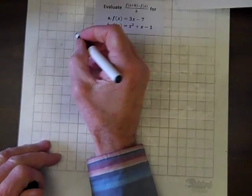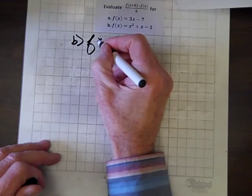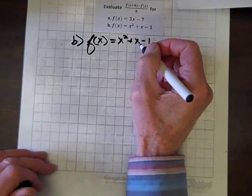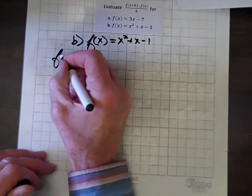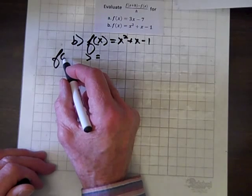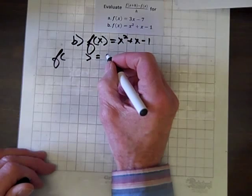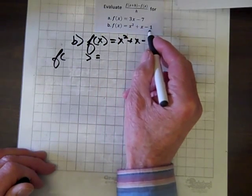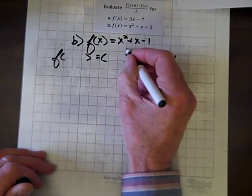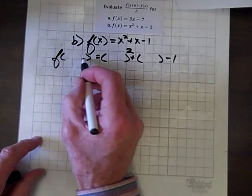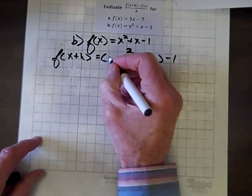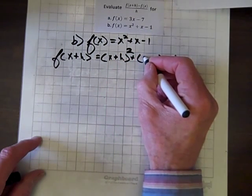Now we'll evaluate part b. The function is f(x) = x squared plus x minus 1. We have to construct the identity for f(x+h). We leave the region in the parentheses blank and replace every variable in the function with parentheses — noting the first term is squared. Whatever we write in the outer parentheses, we install in every set of parentheses. So we have x plus h in each position.